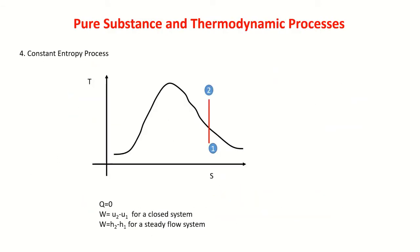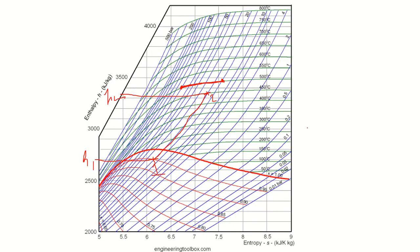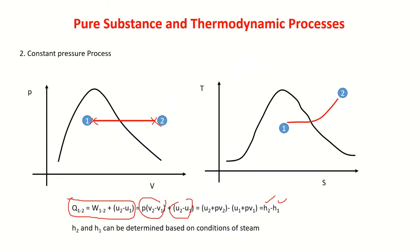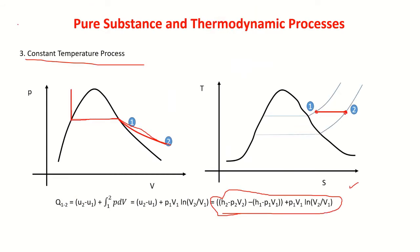Similarly, we can represent a constant entropy process. For example, starting at 50 bar and 550°C and bringing it to 200°C at constant entropy — we trace a vertical line on the Mollier chart (hs diagram). That is how we represent the processes experienced by pure substances on PV and TS coordinates as the system undergoes a change of state.